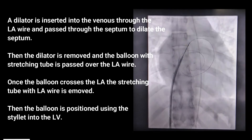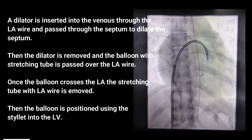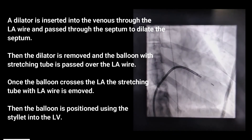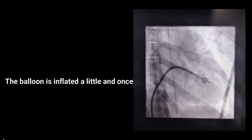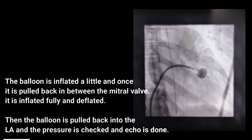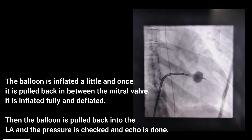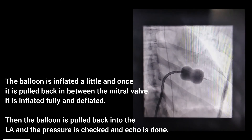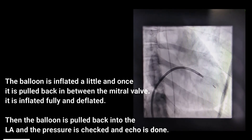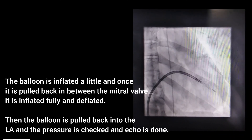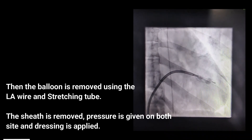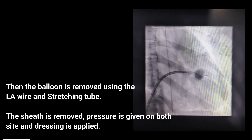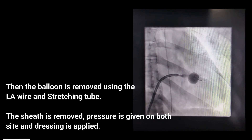The balloon with stretching tube is passed over the LA wire. Once the balloon crosses the LA, the stretching tube and LA wire are removed and the balloon is positioned using the stylet into the left ventricle (LV). The balloon is inflated slightly, pulled back between the mitral valve, then inflated fully and deflated. The balloon is pulled back into the LA, pressure is checked, echo is done, then the balloon is removed using the LA wire and stretching tube. The sheath is removed, pressure is applied on both sides, and dressing is applied.